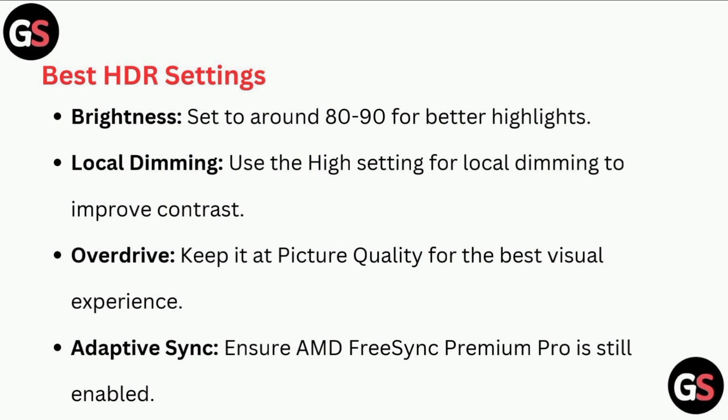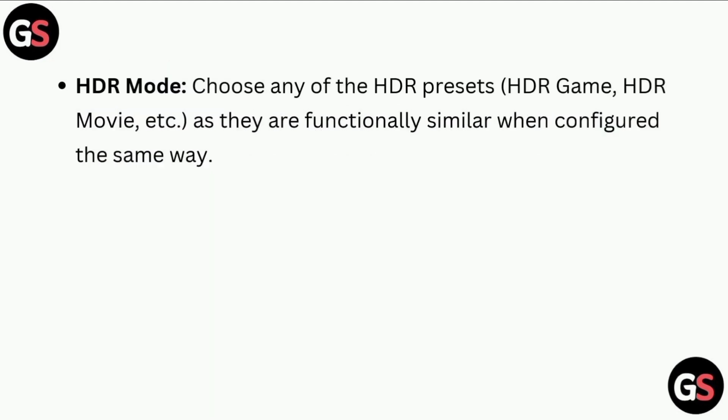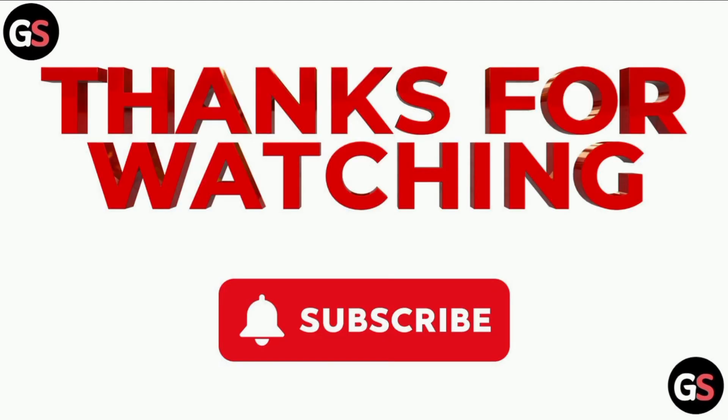Local dimming: use the high setting for local dimming to improve contrast. Overdrive: keep it at picture quality for the best visual experience. Adaptive sync: ensure AMD FreeSync Premium Pro is still enabled. HDR mode: choose any of the HDR presets as they are functionally similar when configured the same way. Thank you for watching our video.